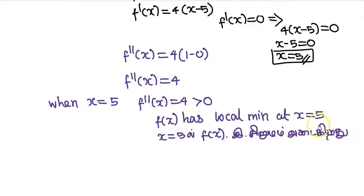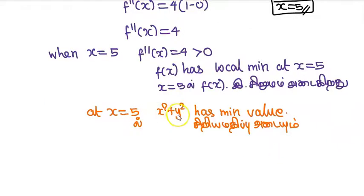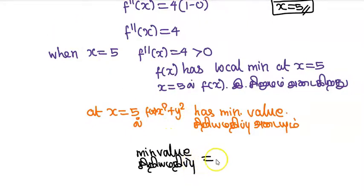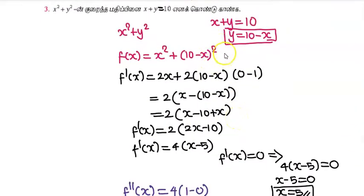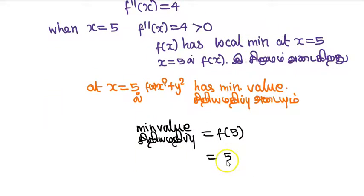Since f''(x) is greater than 0, f(x) has a local minimum at x equal to 5. So the smallest possible value of x² plus y² occurs at x equal to 5. f(x) equals 5² plus (10 minus 5)².